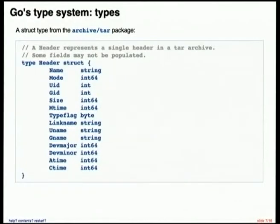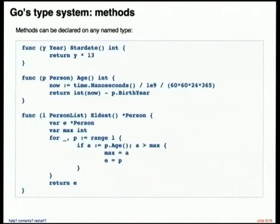Here's a type definition from the tar package — this is a tar file header record. It's just a struct containing the name of a file and all of its associated metadata. A tar file is basically just a concatenation of header records and file data, and this header struct is used by the tar package to represent that part of a tar file.